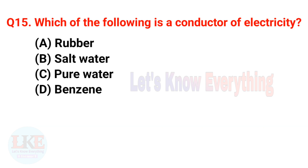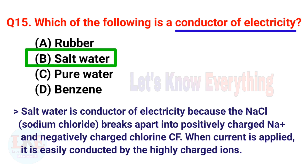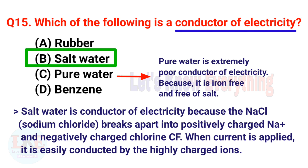Question 15: Which of the following is a conductor of electricity? A) Rubber, B) Salt water, C) Pure water, D) Benzene. The right answer is option B, Salt water. Salt water is a conductor of electricity because NaCl breaks apart into positively charged Na+ and negatively charged Cl- ions. When current is applied, it is easily conducted by these highly charged ions. Pure water is an extremely poor conductor of electricity because it is ion-free and free of salt.